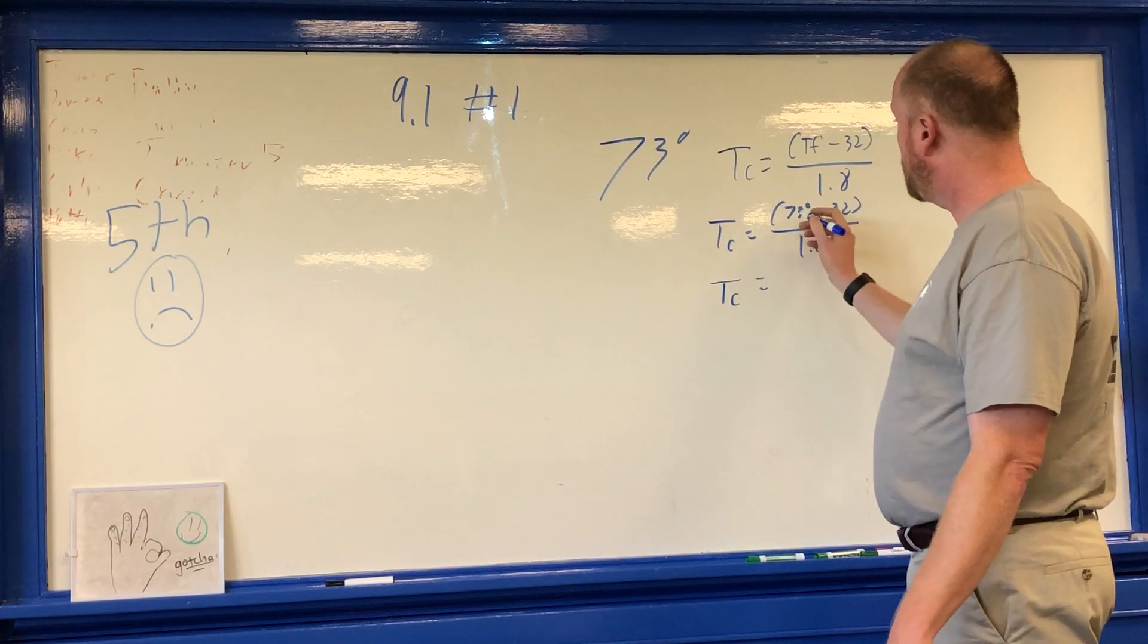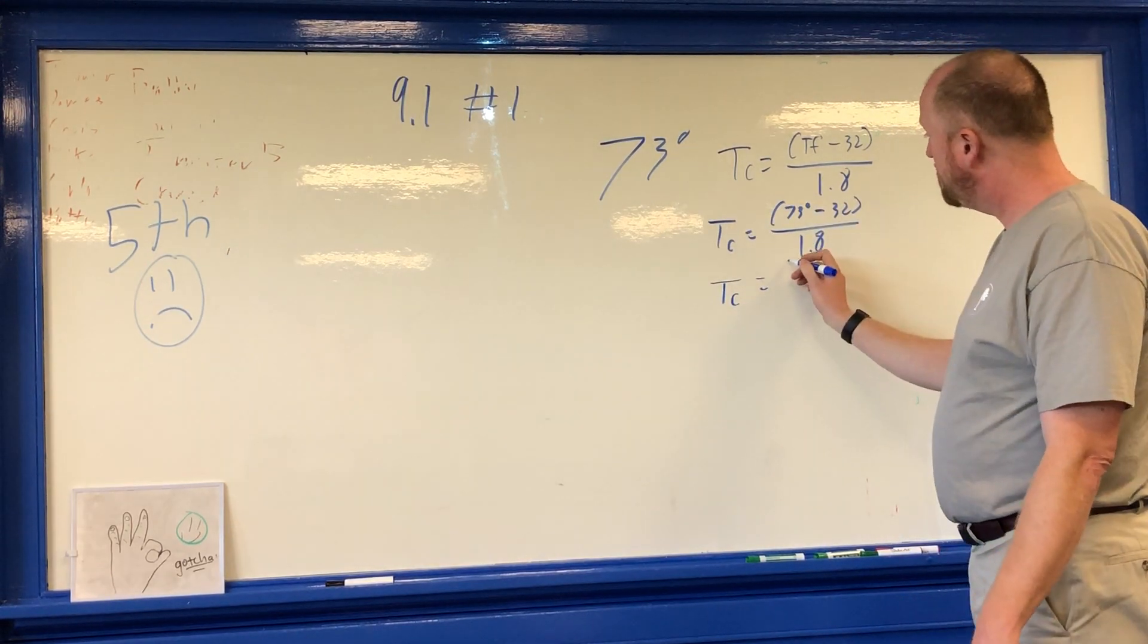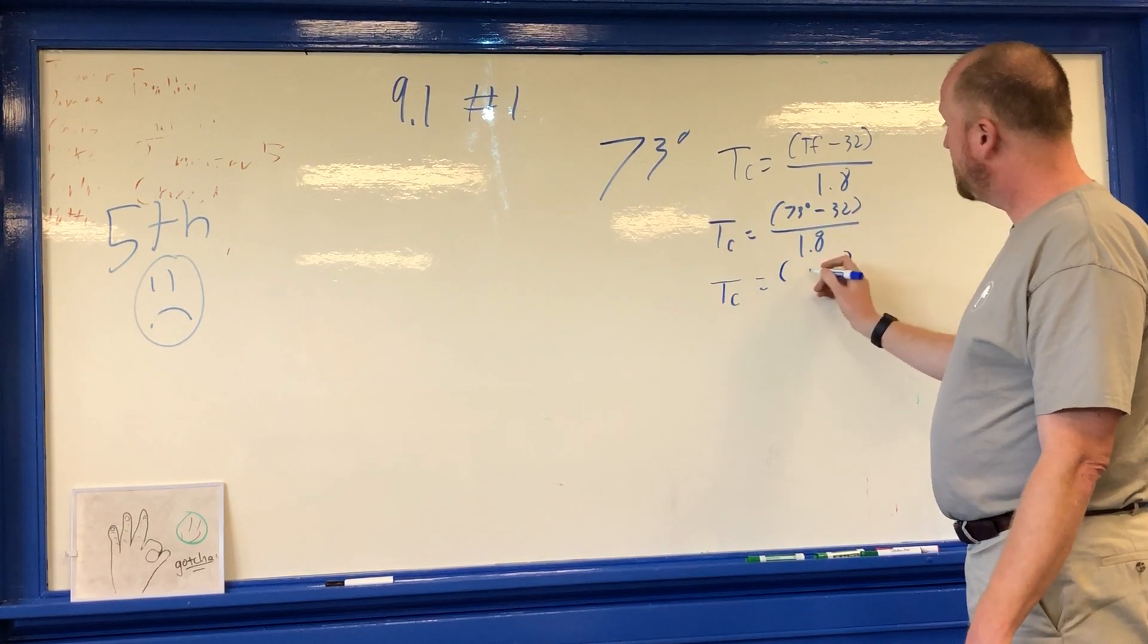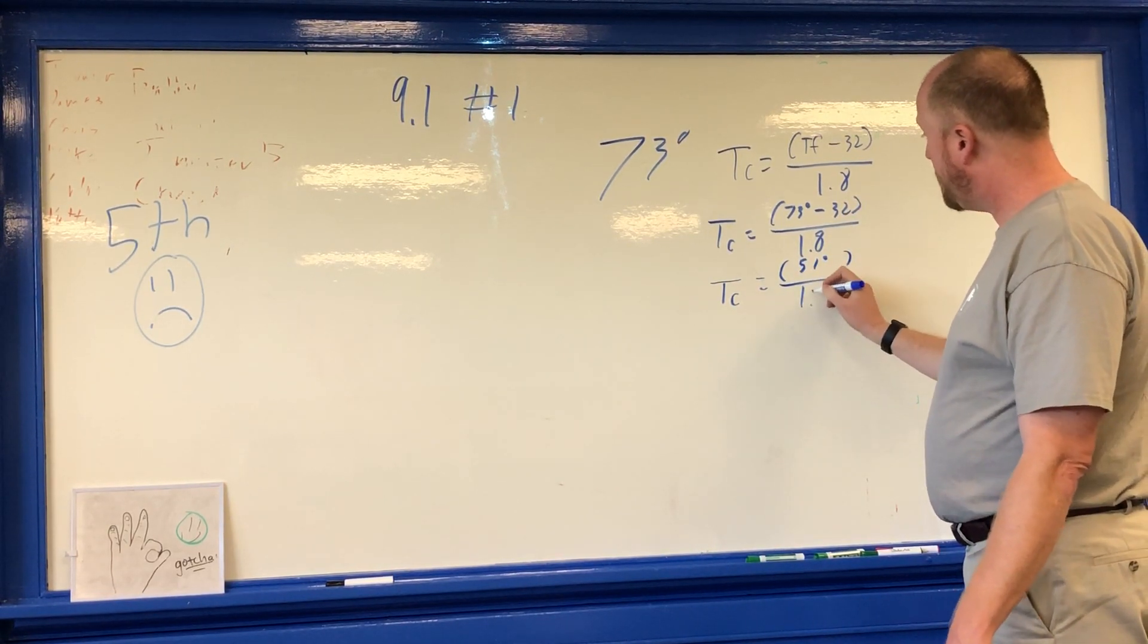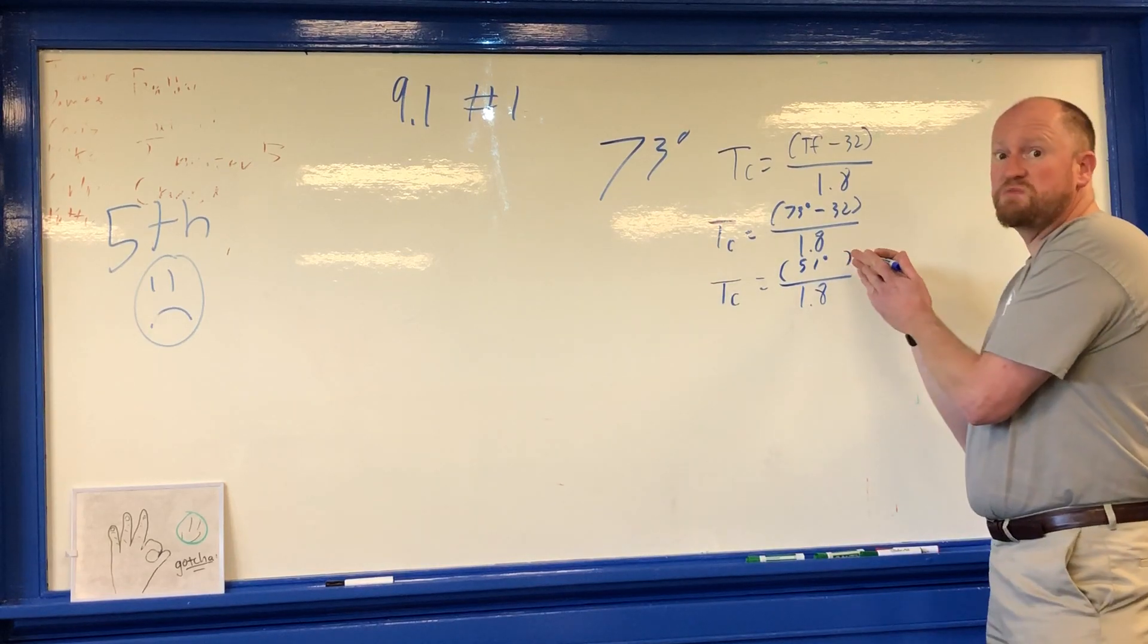Temperature Celsius is equal to 73 degrees minus 32 over 1.8. So let's go through this and explain what we're doing. Now when I subtract 32, what I'm gonna get is 41 degrees.